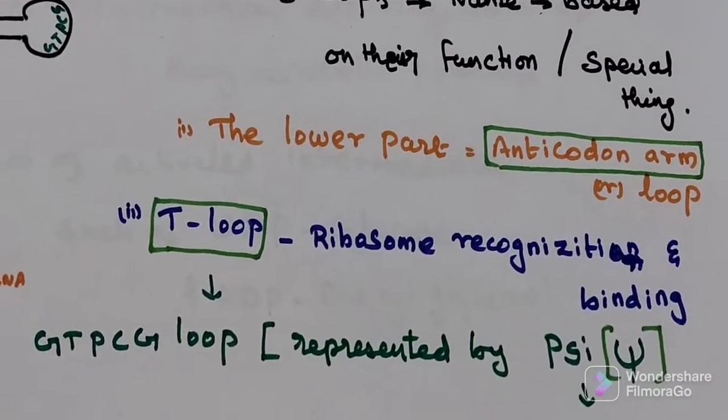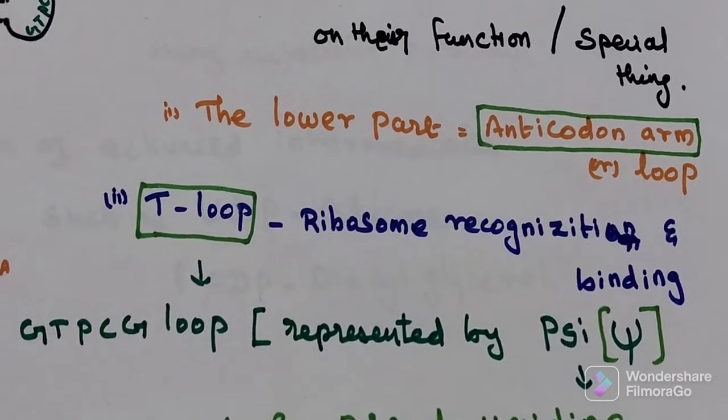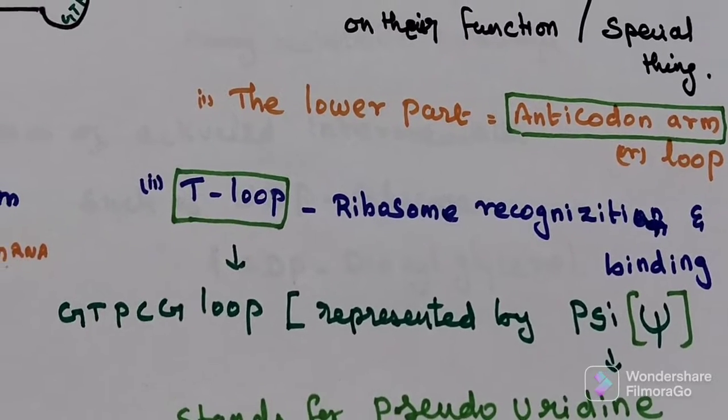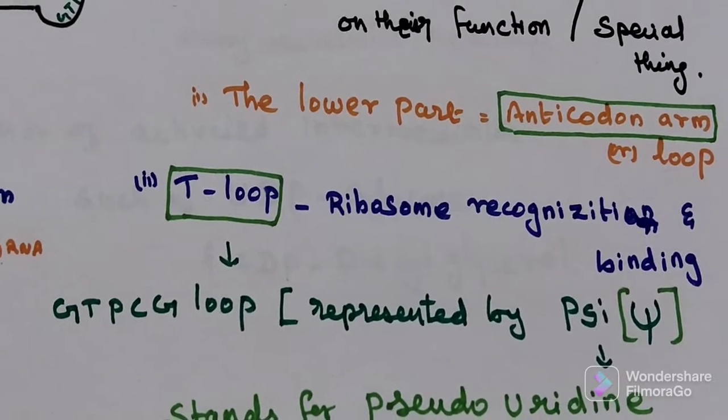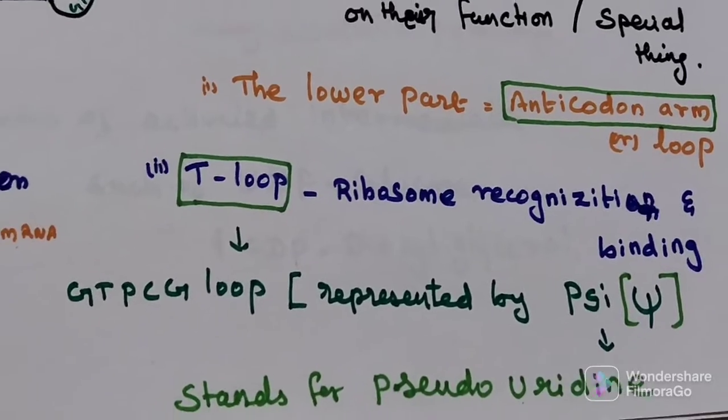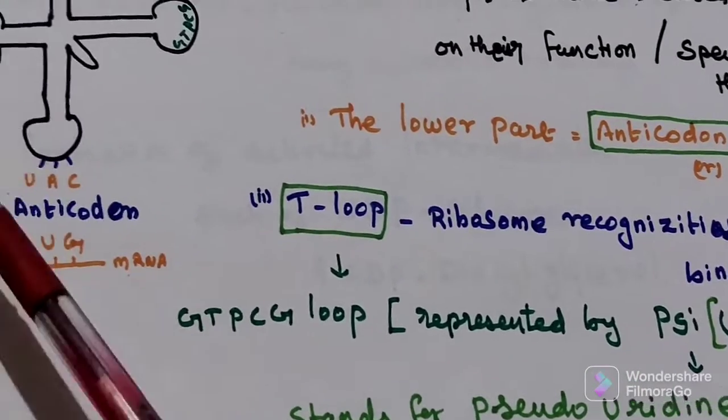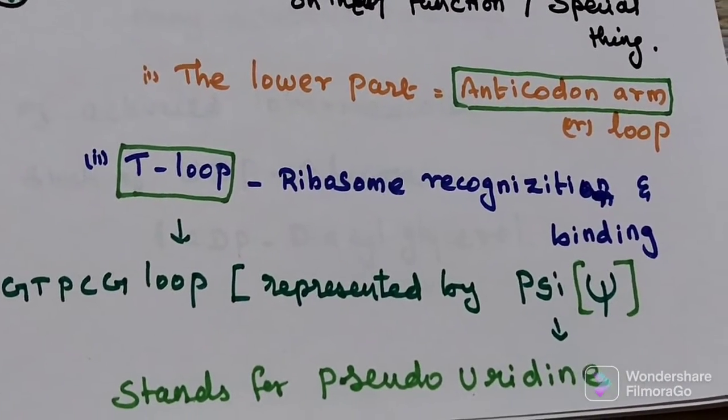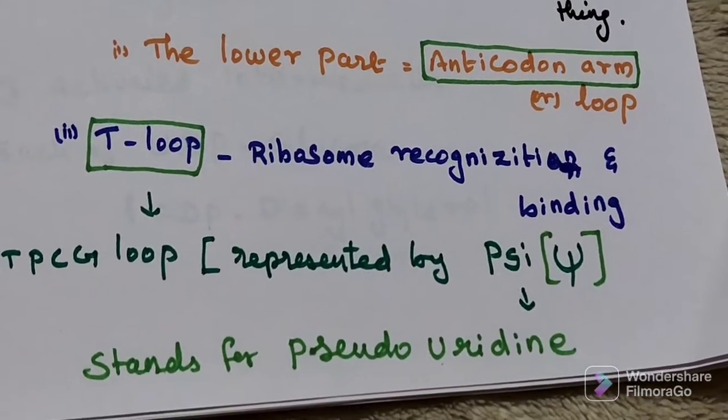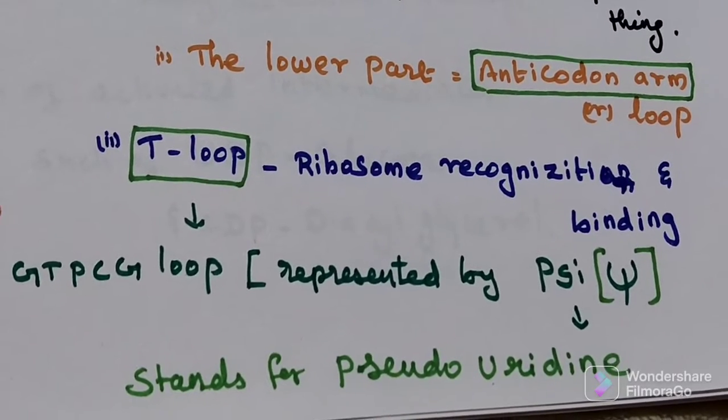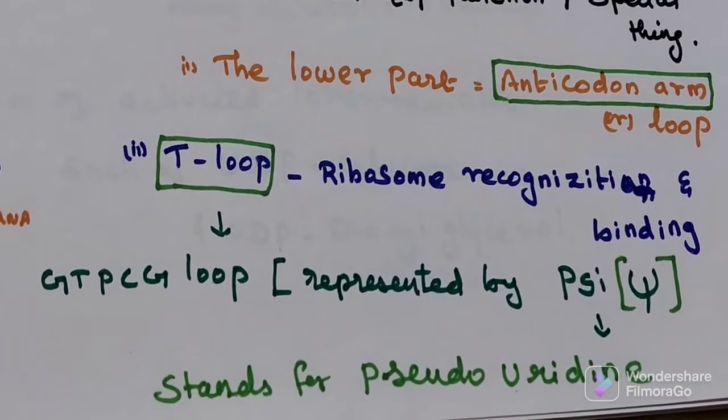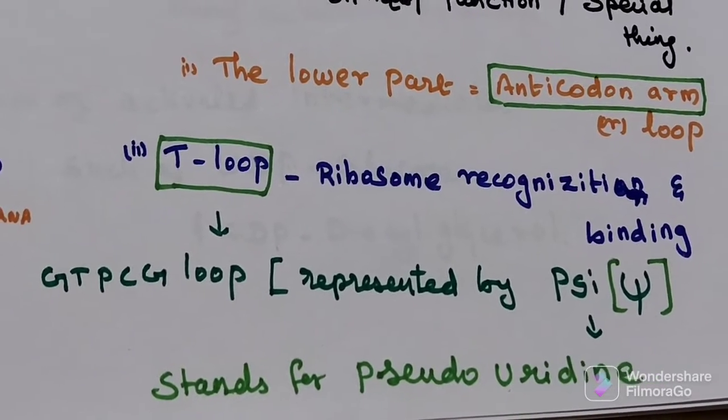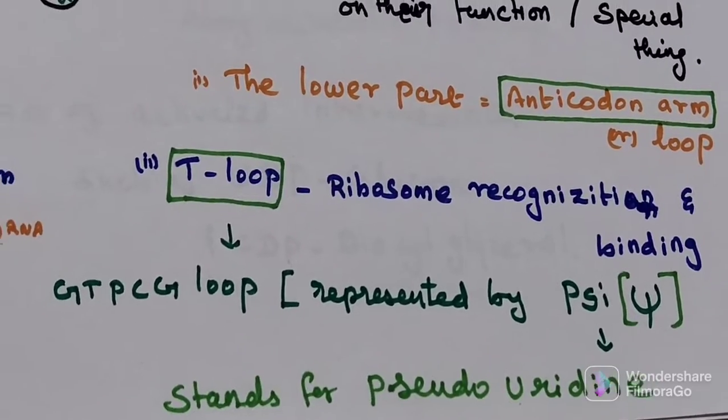The second loop is called T-loop. It helps in ribosome recognition and binding, determining where protein synthesis takes place and to which ribosome this tRNA will attach. This is also called the GTPCG loop, represented by psi (ψ), and it stands for pseudouridine. Uracil is modified into pseudouridine.